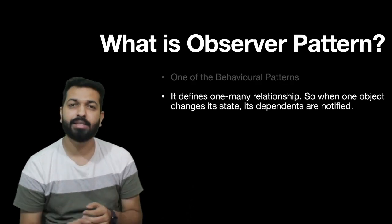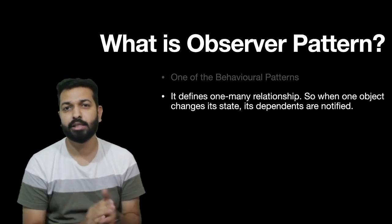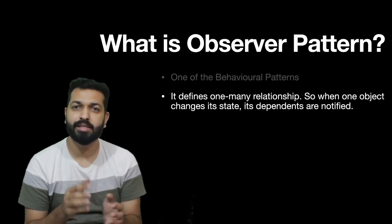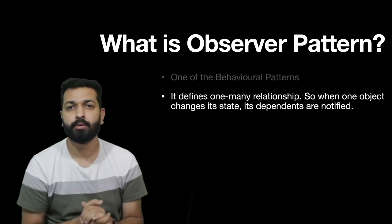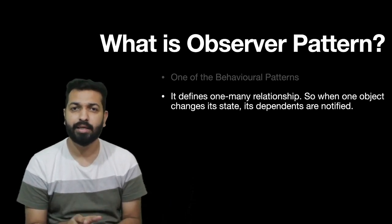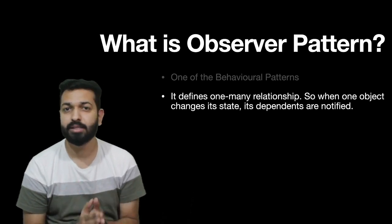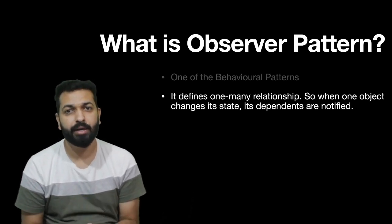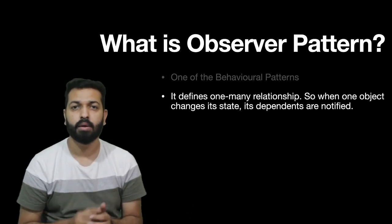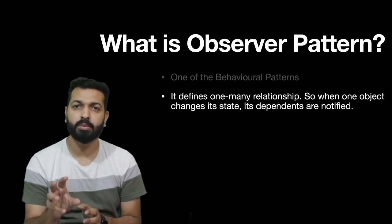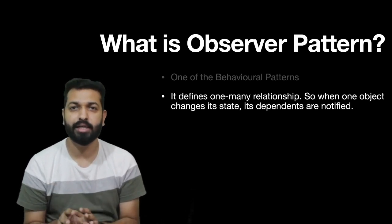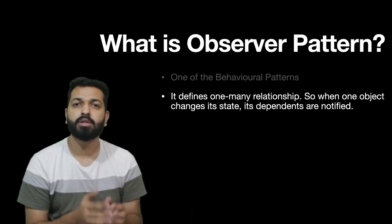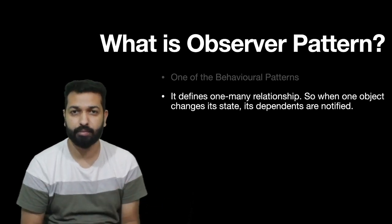Observer pattern defines a one-to-many relationship between objects. When one object changes its state, the other dependent objects are notified. These definitions will become crystal clear when we see examples and implement it, but for now understand that when one object changes its state, its dependent objects will be notified because a one-to-many relationship has been set up.